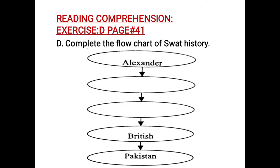For example, the oldest people who lived in Swat were the descendants of Alexander. But after Alexander, you have to write the people who came and lived in Swat, and after that you have to write the next group of people who lived in Swat until the British came, and finally the Pakistani people. You have to fill the second and the third box according to the history.